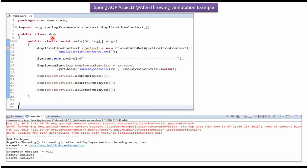Here I have defined the class App. Here I have created ApplicationContext object by reading Spring configuration file. Using getBean method of ApplicationContext object, getting EmployeeService object from Spring container and calling AddEmployee method, ModifyEmployee method, and DeleteEmployee method.